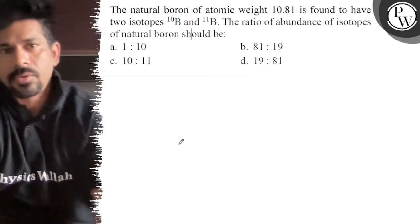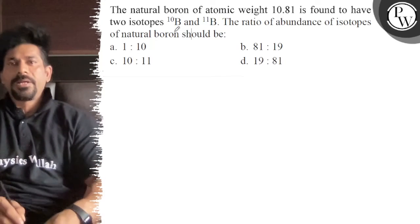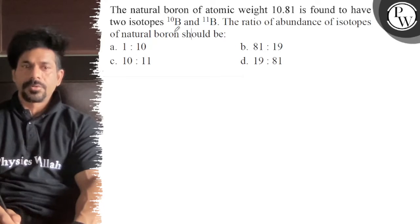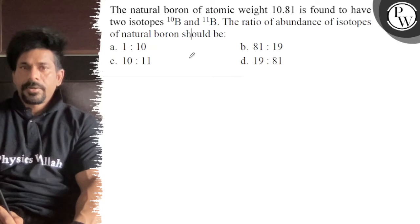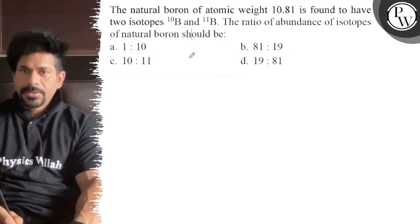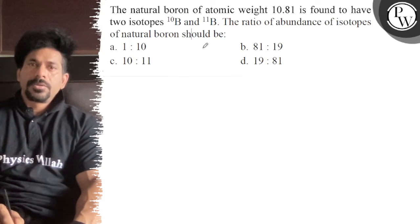Hello, let's see the question. The natural boron of atomic weight 10.81 is found to have two isotopes, boron-10 and boron-11. The ratio of the abundance of the isotopes of natural boron should be...